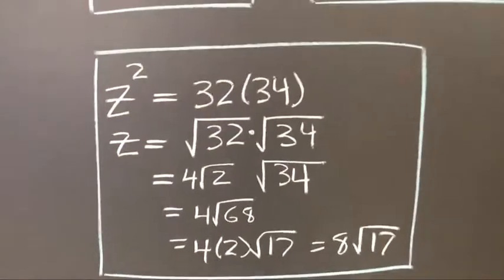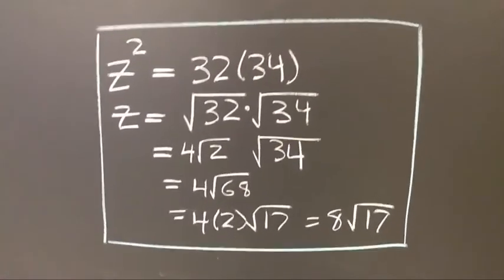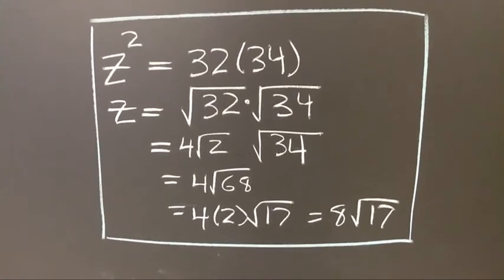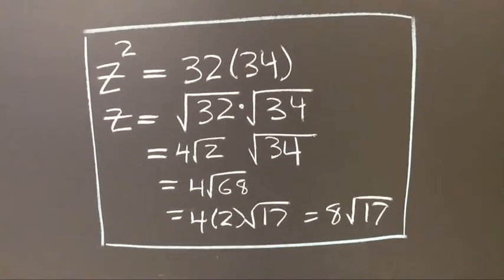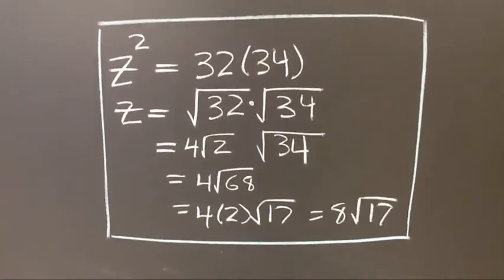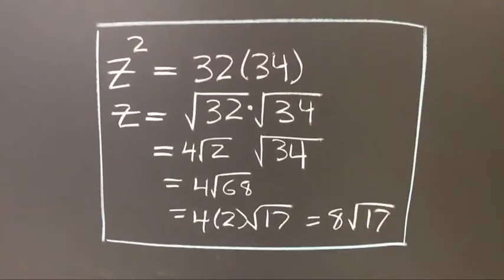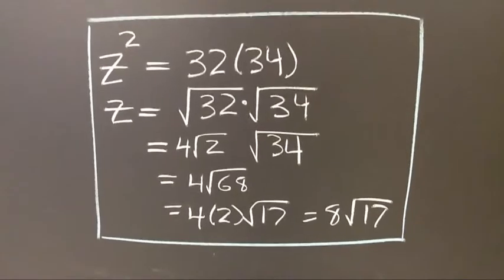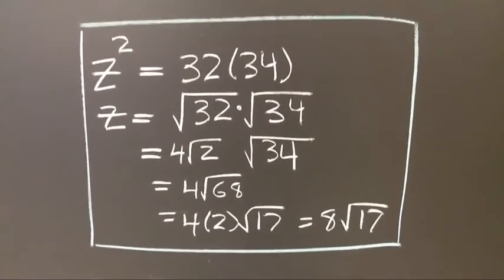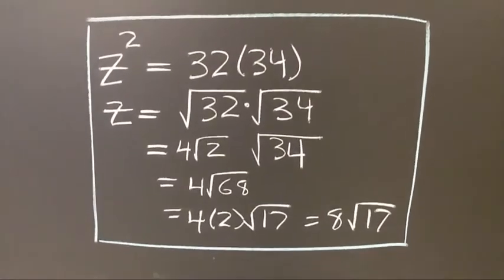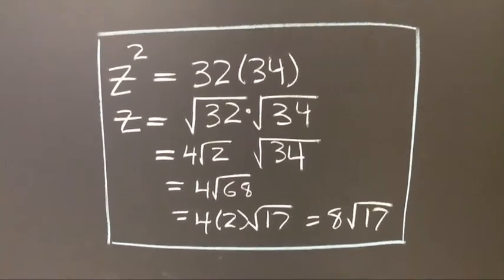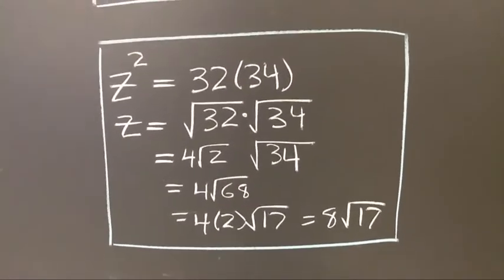So z squared equals 32 times 34. And what I could have done here is I could have multiplied 32 and 34, which would have given me a rather large number. Instead, what I did was I took the positive square root of both sides, which allows me to take the square root of 32 and 34 separately. So I'm actually making life easier by doing this.